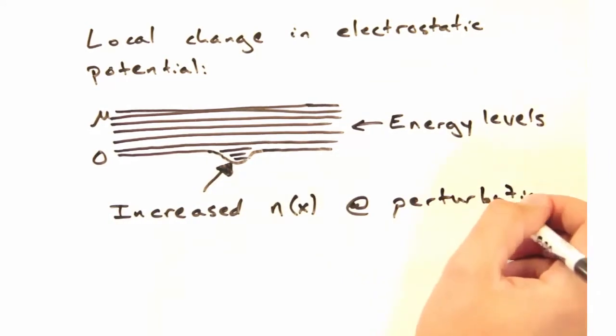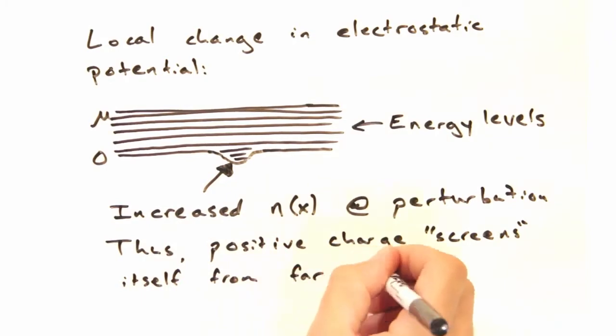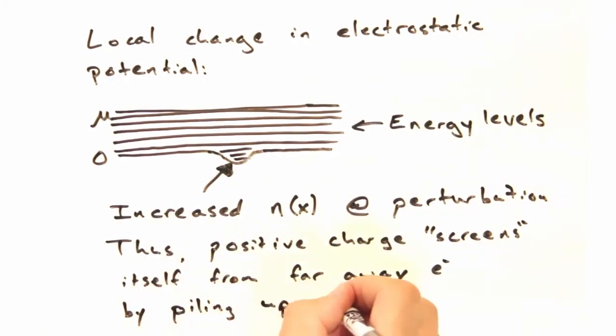At the perturbation, there's increased local charge density, n. Thus, the positive charge screens itself from far away electrons by piling up charge nearby.